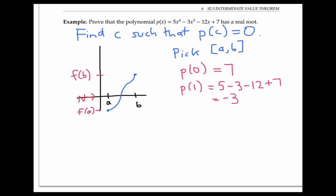So in this very lucky example, the first two numbers that we pick will work for our a and b. We can just let [a,b] equal [0,1] because p(0) is a positive number and p(1) is a negative number.